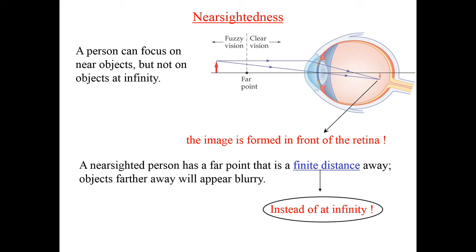The next issue we want to discuss with optics and the human eye is how eyeglasses work. There are two general issues with a person's eyes that can prevent them from seeing clearly, and we want to discuss how eyeglasses can be used to correct for these issues.